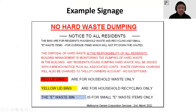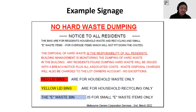The next example is signage that has worked quite well. We have this displayed all over the apartment and especially where people usually dump rubbish — blown up to A3 size. It says no hard waste dumping, and notices all residents where to put rubbish: red bins, yellow bins, and e-waste bins. In red, it states it is the responsibility of all residents to get rid of their own rubbish, and if not, they will receive a breach notice and any charges for disposal will be put onto them. This worked very well in one of the buildings we work in.